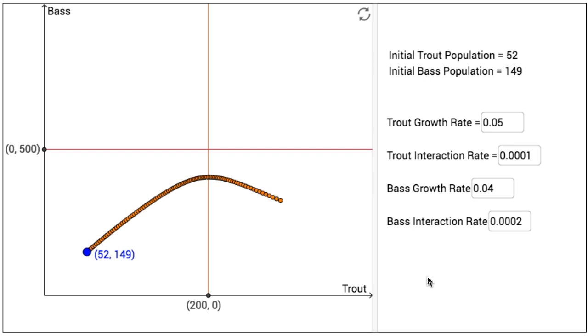Over time, the populations of both species will change, so the population of trout could be expressed as some function x of t, and the population of bass could be expressed as some function y of t.